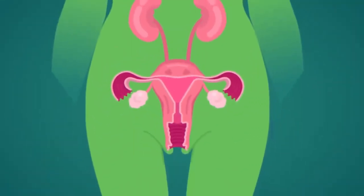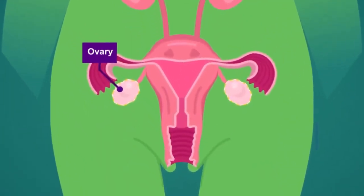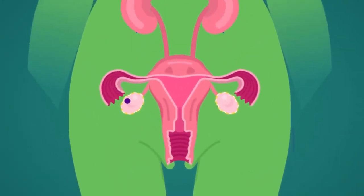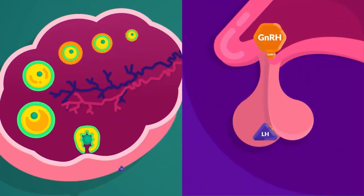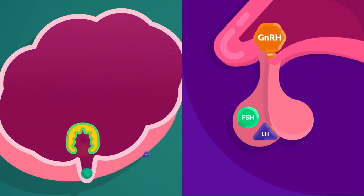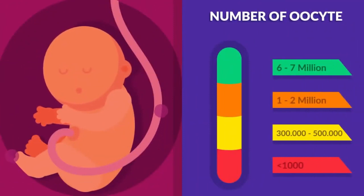In the female, there are two ovoid-shaped ovaries attached to the dorsal body wall just below the kidneys. Eggs or ova develop inside the ovaries of the mature female human. Ovaries are also responsible for the production of estrogen and progesterone.